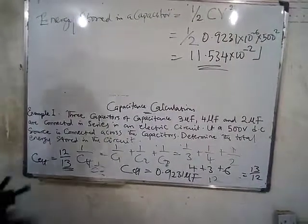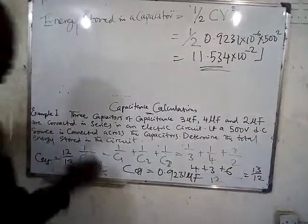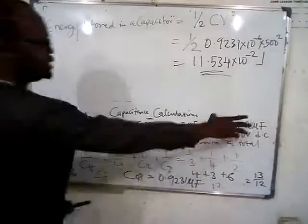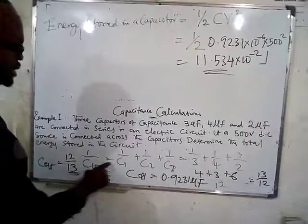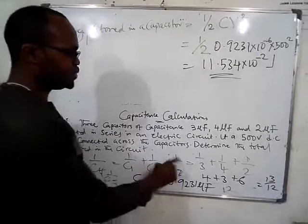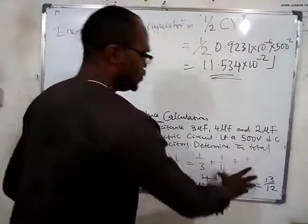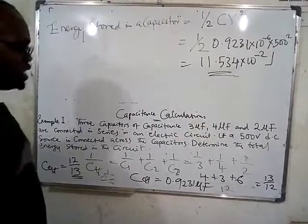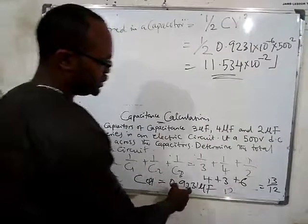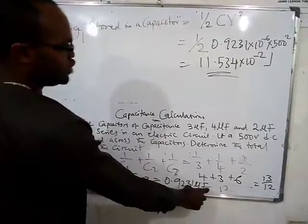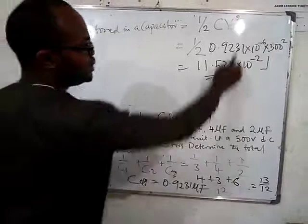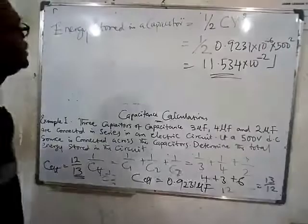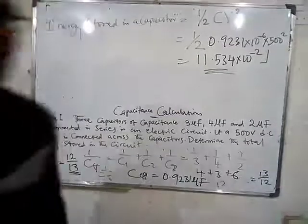To recap: in approaching this question, we first found the effective capacitance. Since the capacitors are connected in series, we used 1 over C_eff equals 1 over C1 plus 1 over C2 plus 1 over C3, arriving at 0.9231 microfarad. We then converted microfarad to farad by multiplying by 10^-6 and applied the energy stored formula to get the final answer. Thank you.